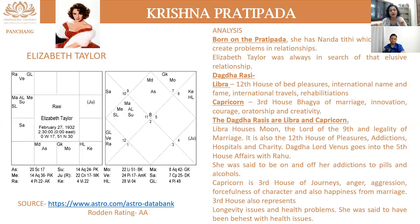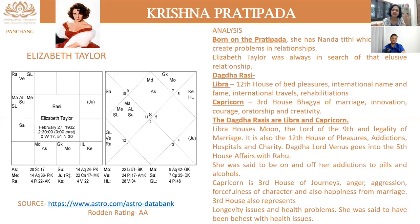She's said to be on and off alcohol and addictions to pills. Capricorn is the 3rd house of journeys, anger, aggression, forcefulness of character, and also happiness of marriage. She was an extremely volatile person — she had a huge, beautiful character, but it always needed a forefront. Capricorn for her is also the bhagya of marriage, and she had problems in marriage. The 3rd house also indicates health issues — if you read on Wikipedia, the amount of health issues she suffered from was not something to be taken lightly.